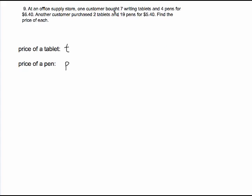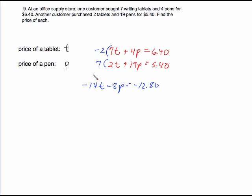So what we have for our two equations relates to the fact that we have two different customers. This one customer bought seven of the tablets. Seven T represents what it would cost her to buy seven tablets, plus four P. That represents the cost for her pens for a total cost of $6.40. This customer bought two tablets plus 19 pens for $5.40. This one is one that we will do by elimination. I'm just going to multiply this by negative two and this by positive seven. It will give me negative 14T minus 8P equals negative 1280. Multiply the bottom by seven. It's 14T plus 133P equals 3780. The T's cancel out. This is 125P.